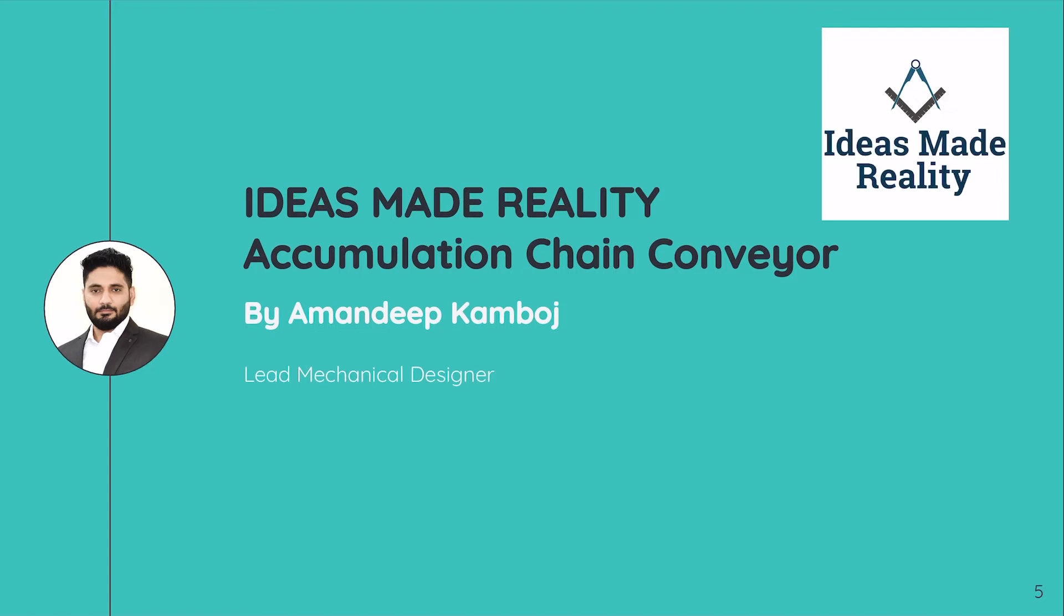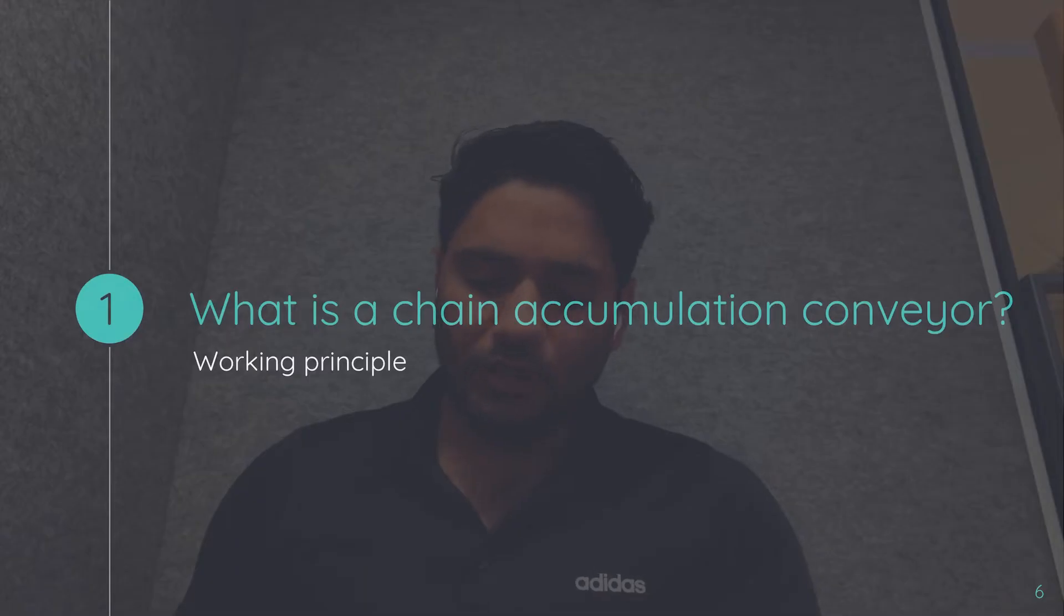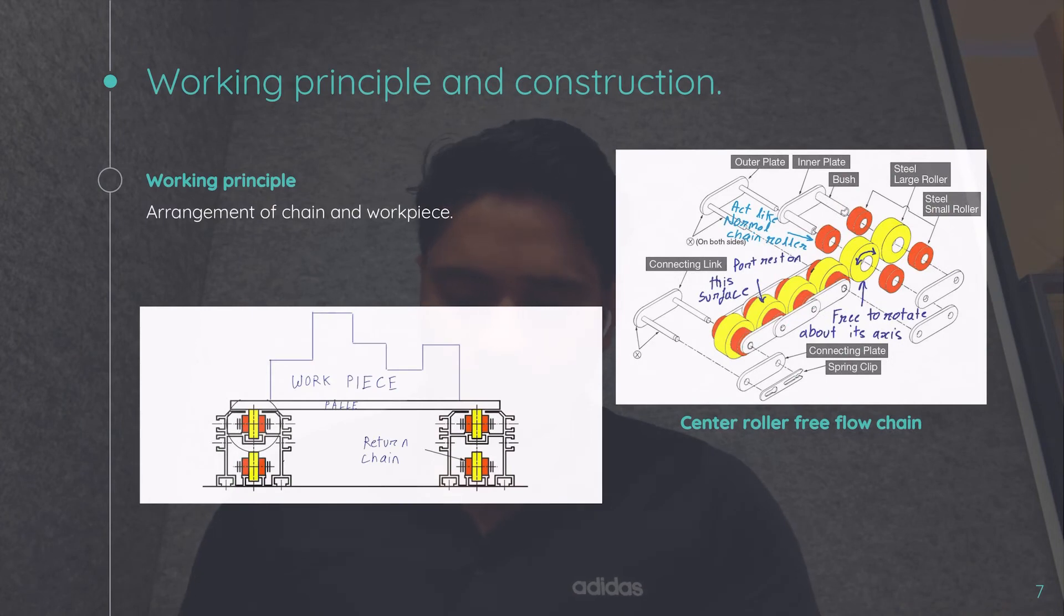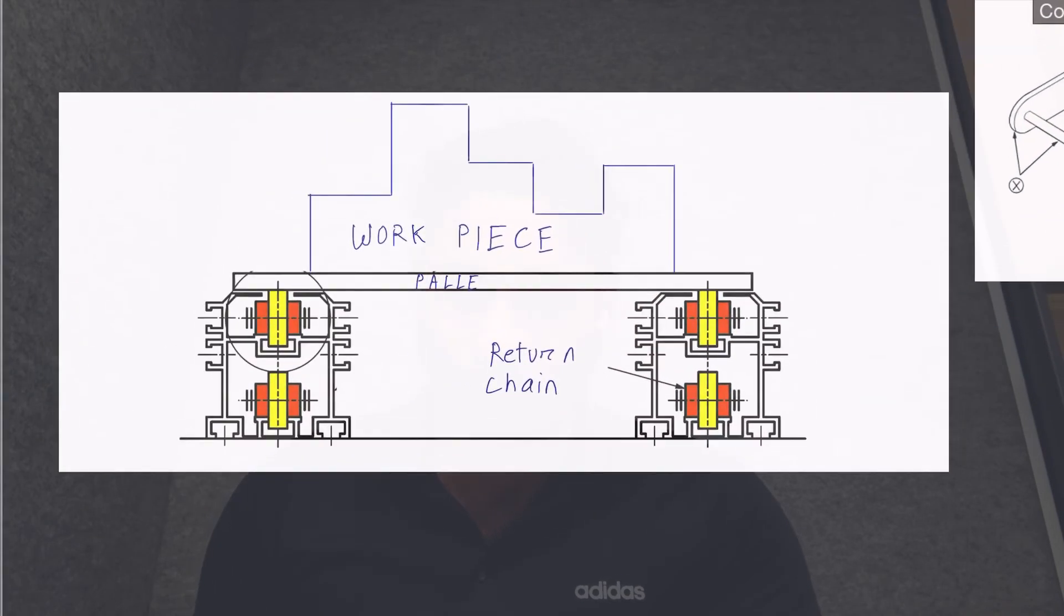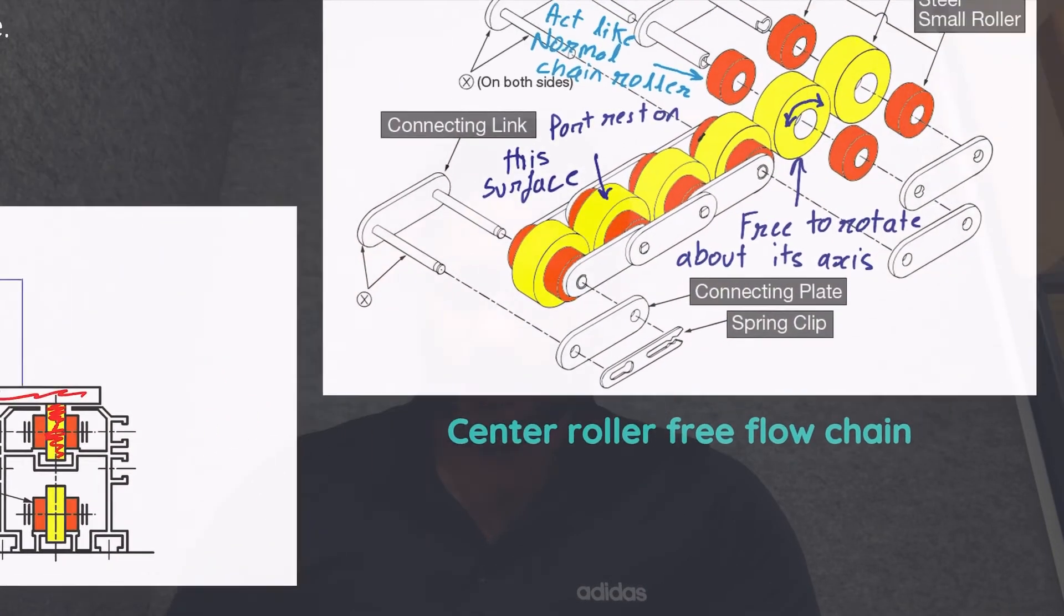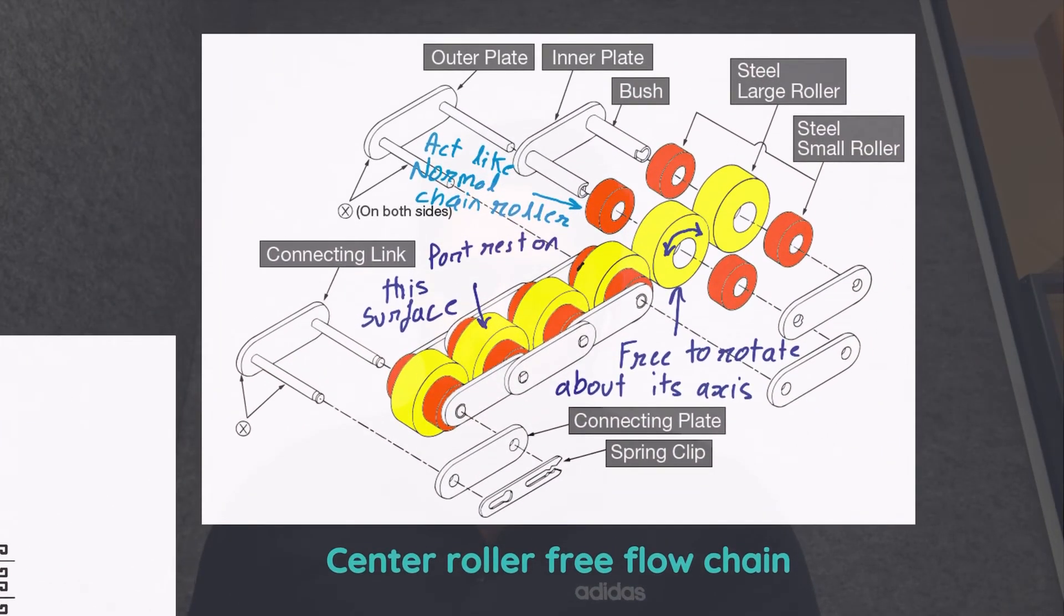What is chain accumulation conveyor and what is its working principle? The working principle is almost similar for every conveyor except the belt conveyor. We will discuss that in detail when we get to belt conveyors. For now, let's discuss the chain conveyor. This is a typical arrangement of a chain conveyor: you have a pallet, then you have your chain roller.